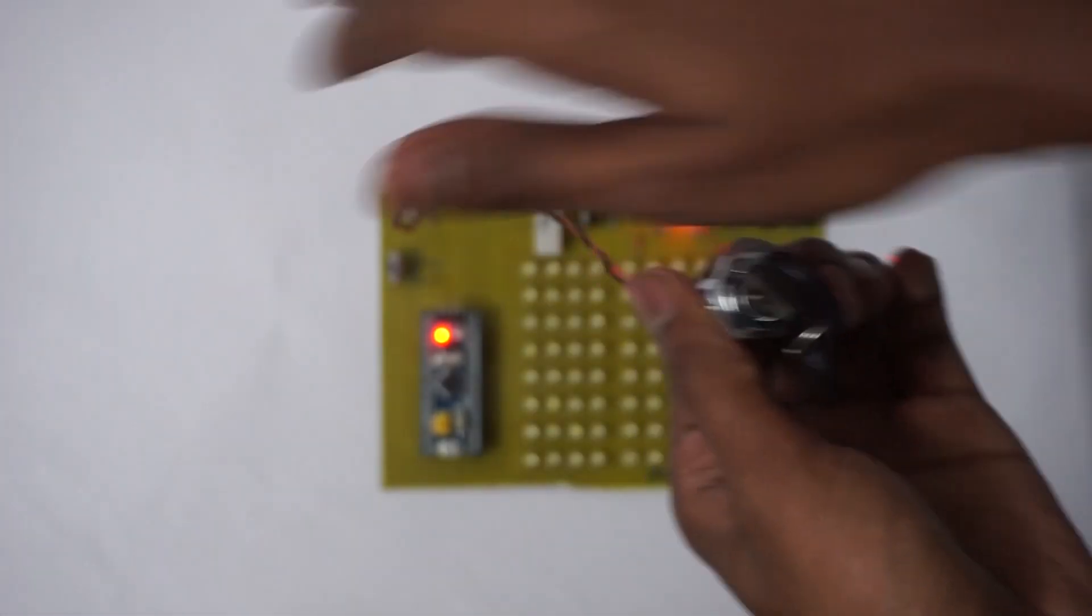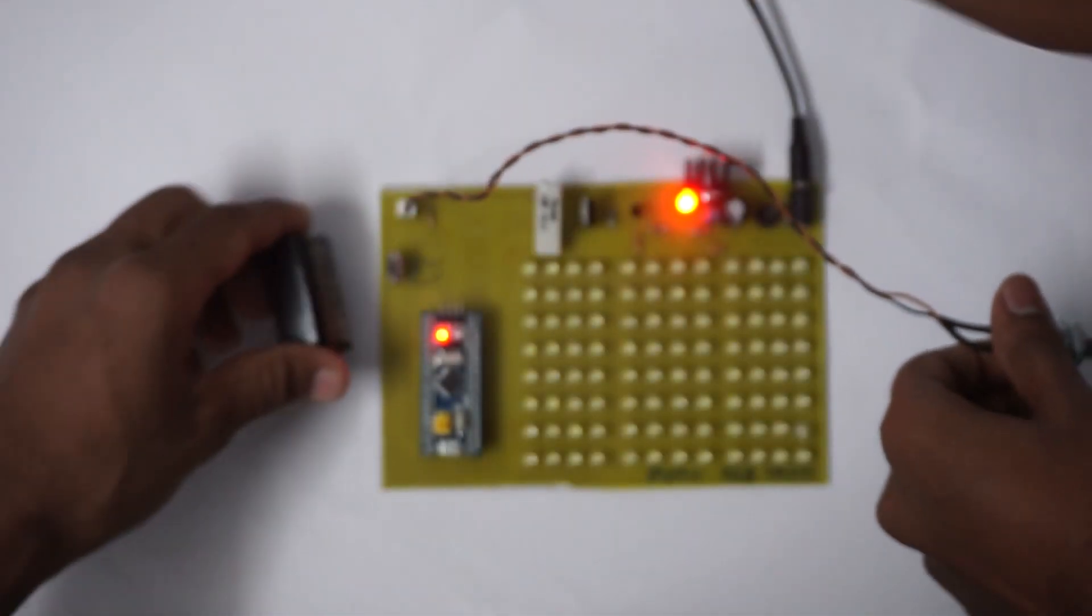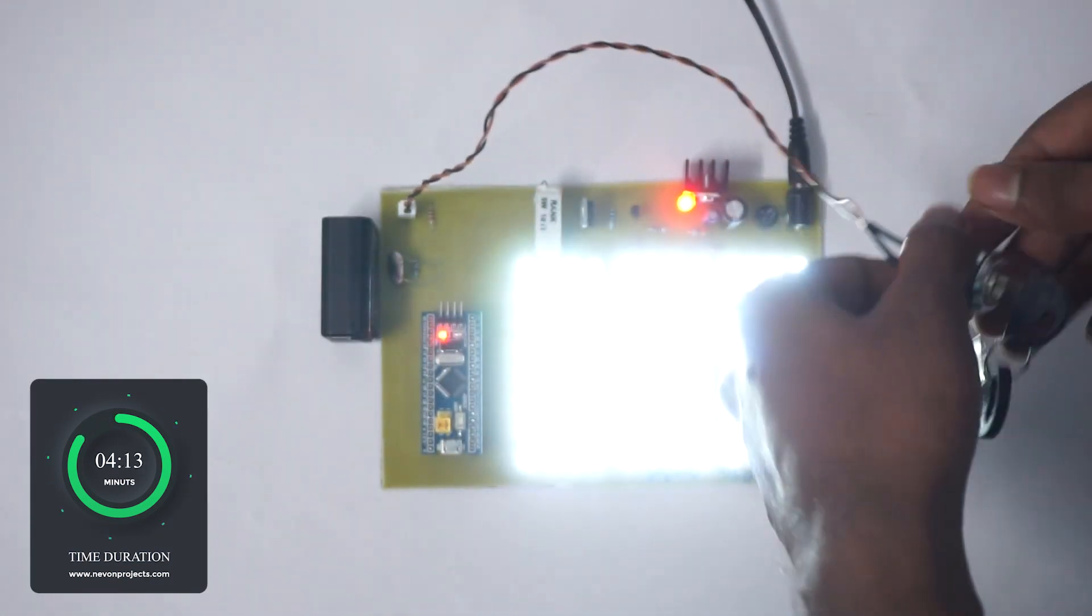Now, when we turn off the ignition, the controller waits for 5 minutes and automatically turns off the headlights to avoid battery drain.